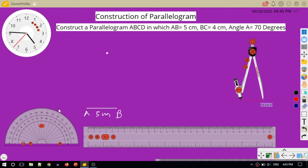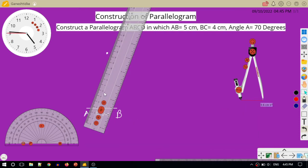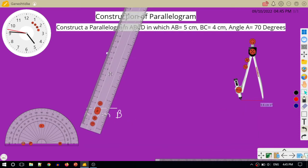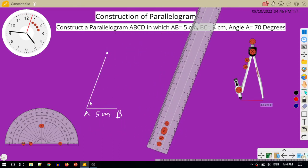This is my AX. I will join AX. This is 70 degrees. So from AX, I will cut off AD is equal to 4 centimeters.